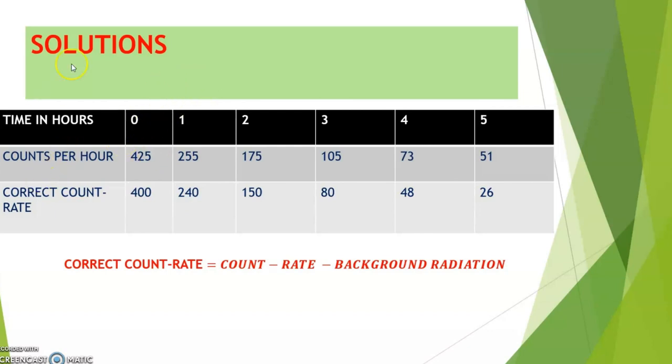425 minus 25, I will write here 25. That is 25 count rates, 25 count rates per hour. We need to subtract that 25 from 425, and we have the correct count rate as 400. Then, 255, we subtract 25, we have 240.